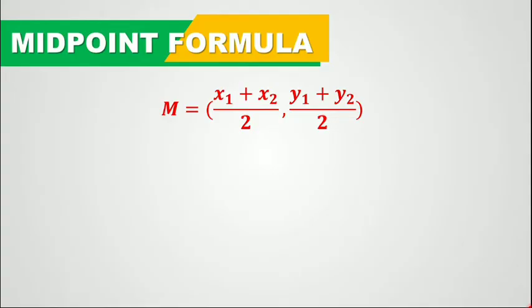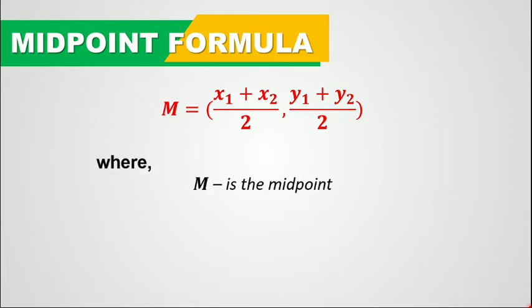In solving for the midpoint of a given line segment whose coordinates of the two endpoints are given, we will simply use this formula which states that the midpoint is equal to the sum of the x coordinates over 2 and the sum of the y coordinates over 2 — or simply x1 plus x2 over 2 and y1 plus y2 over 2 — where m is the midpoint.